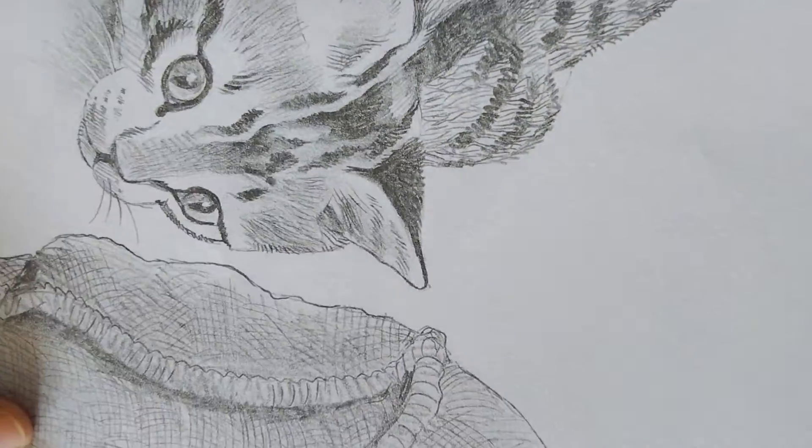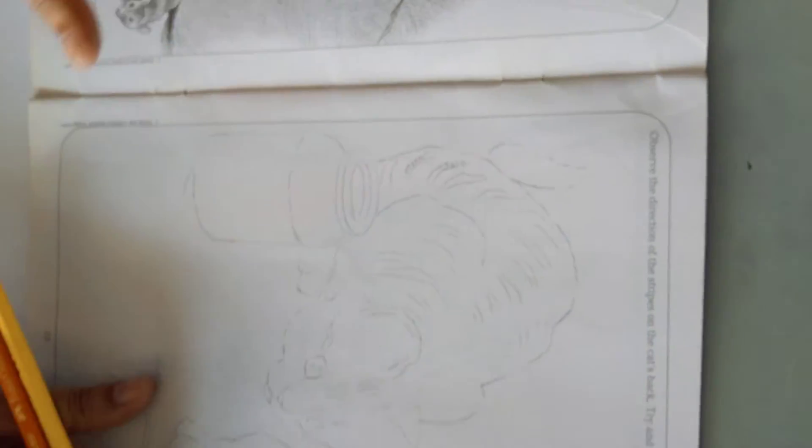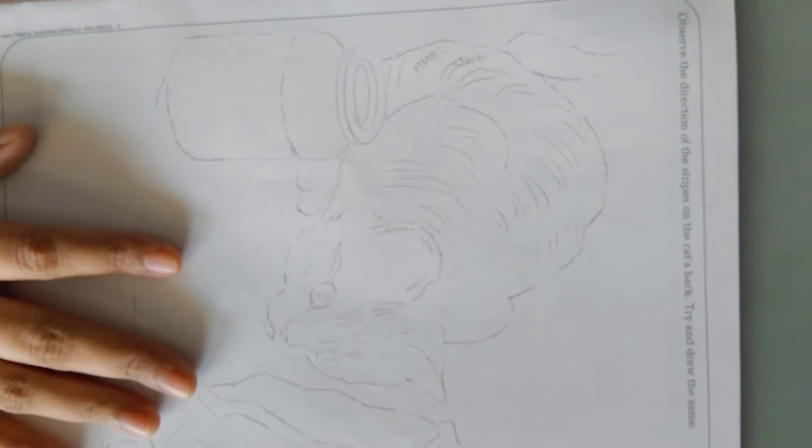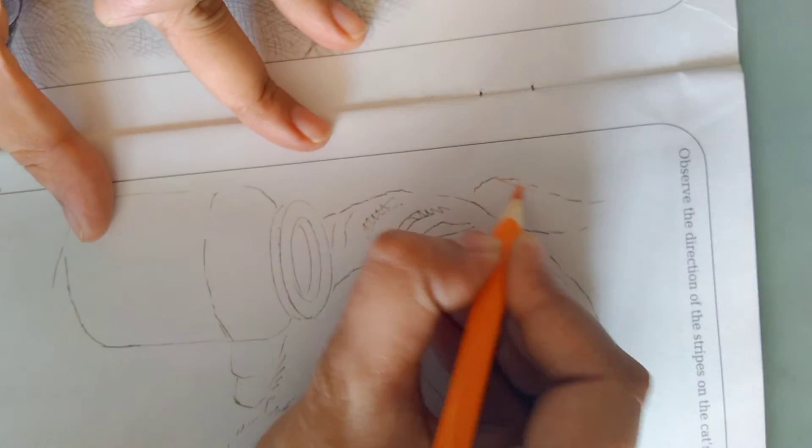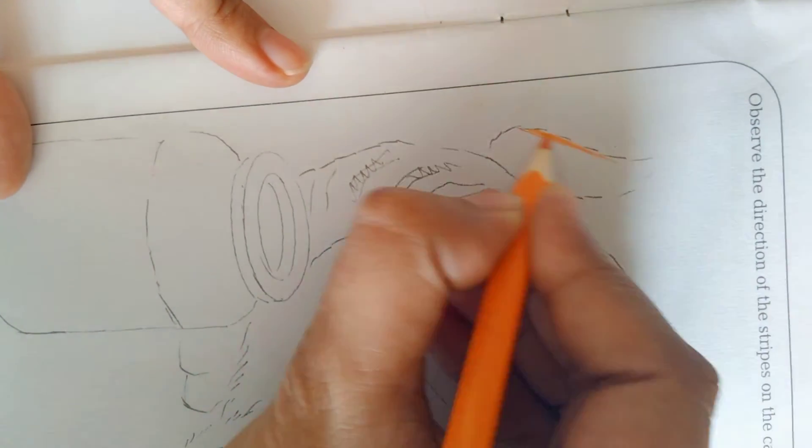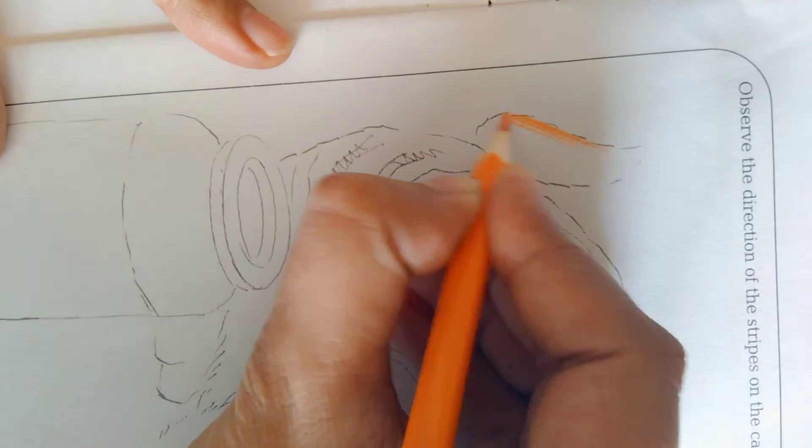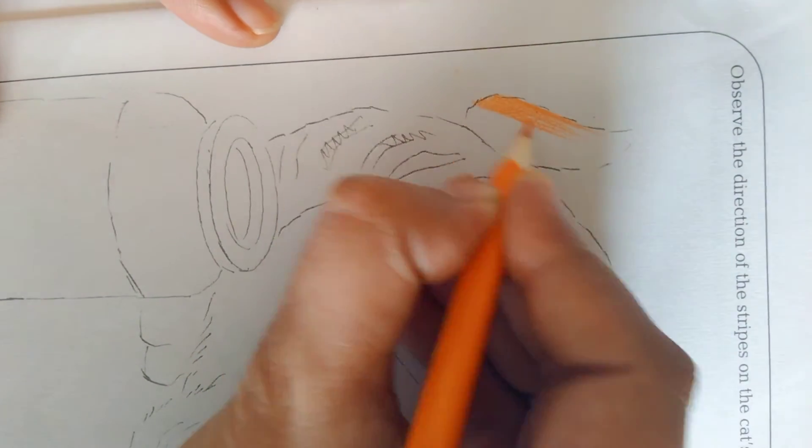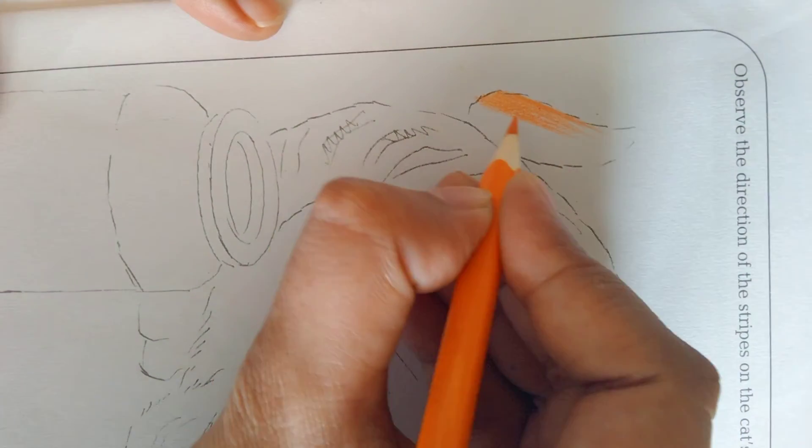Now students, we will draw a design on the paper and apply the colors on the surface. Just give the strokes and then merge them together.